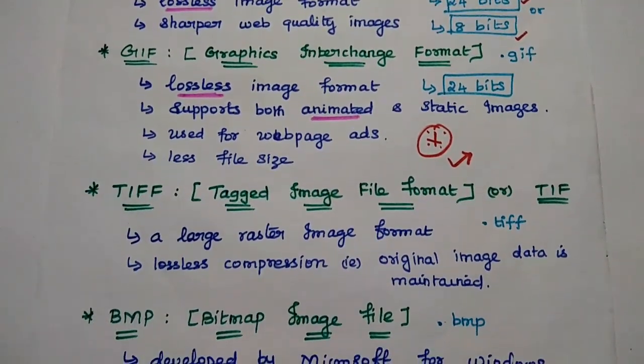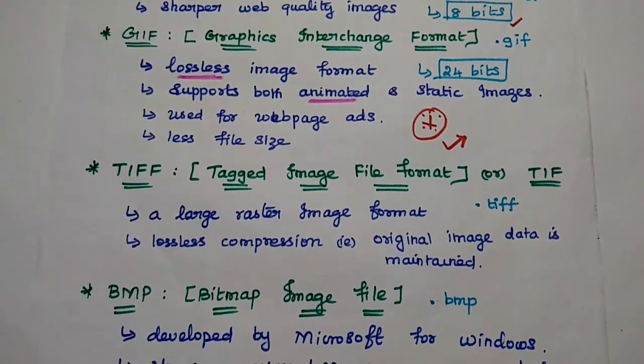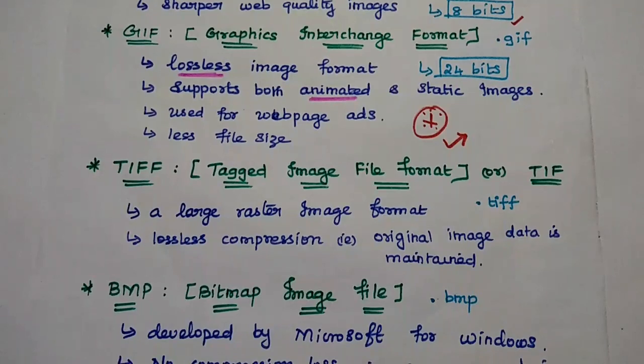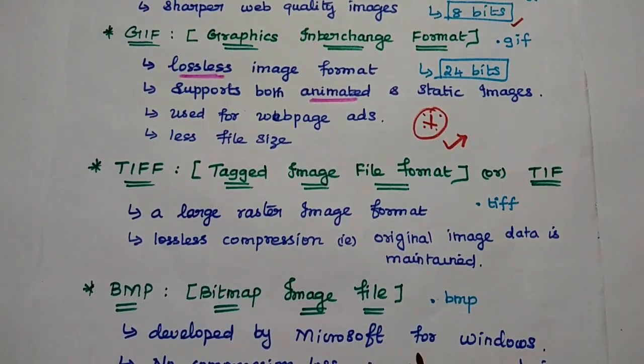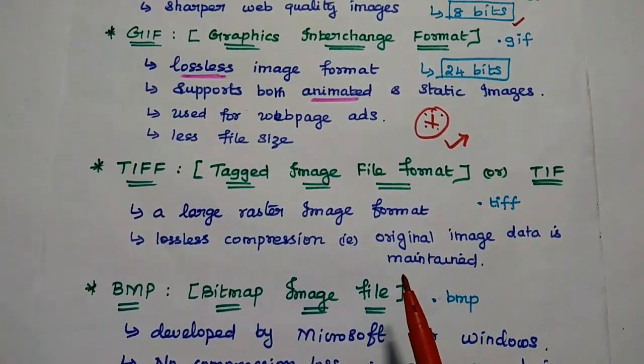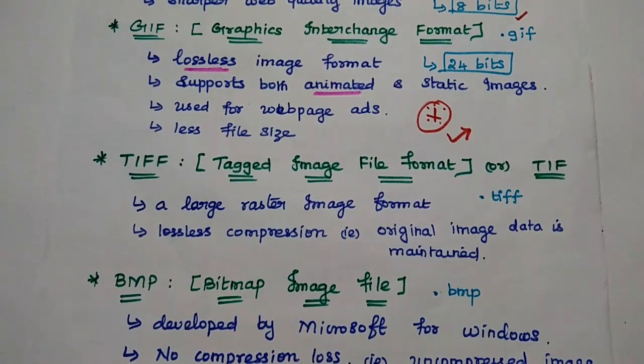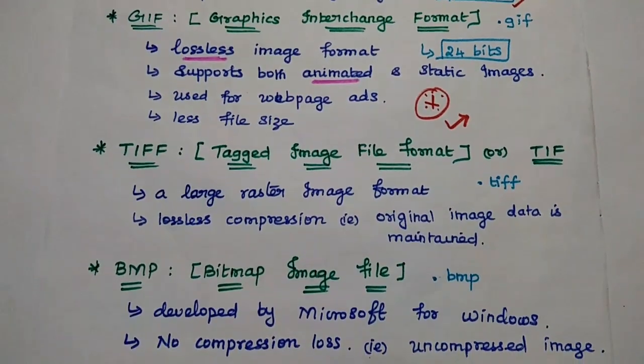Next one is TIFF. TIFF means Tagged Image File Format. Here it is a larger raster image format. It is having a large image size and also it has lossless compression. We can preserve the original image. Here we can use this TIFF format to represent the remote sensing data.